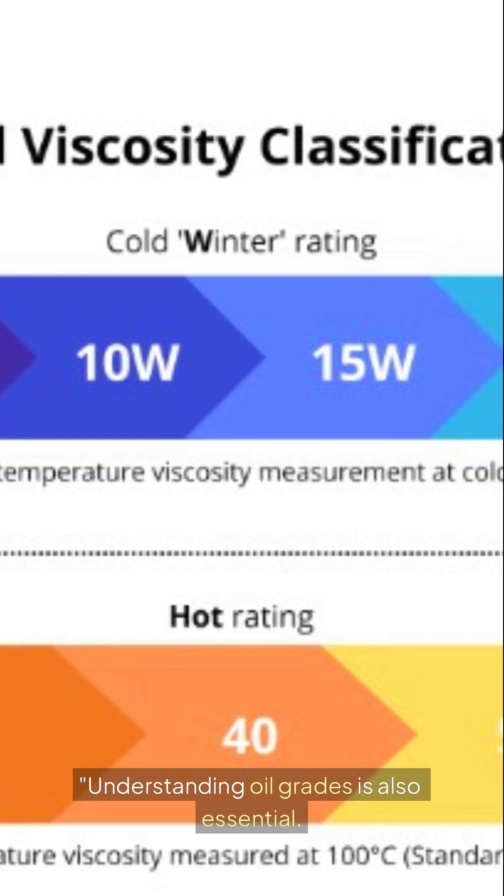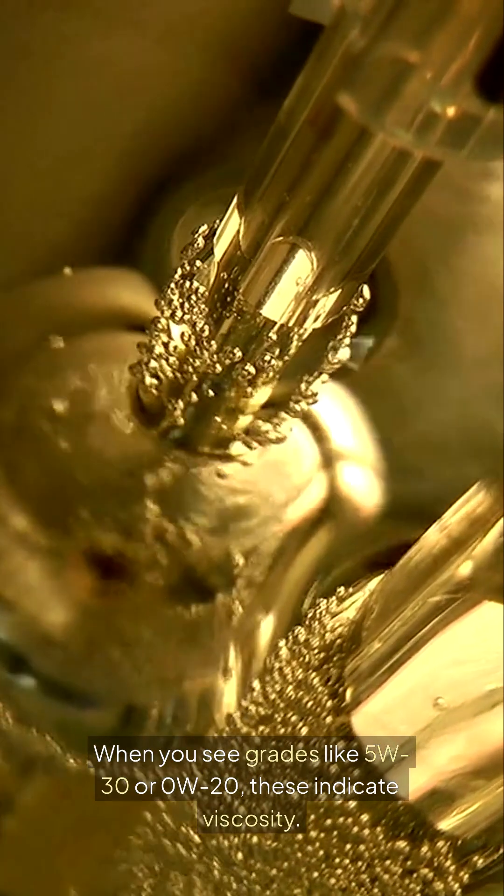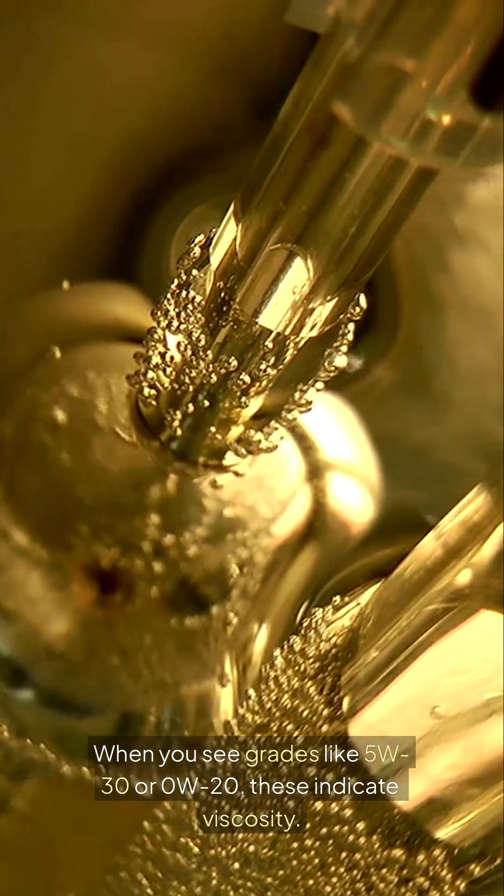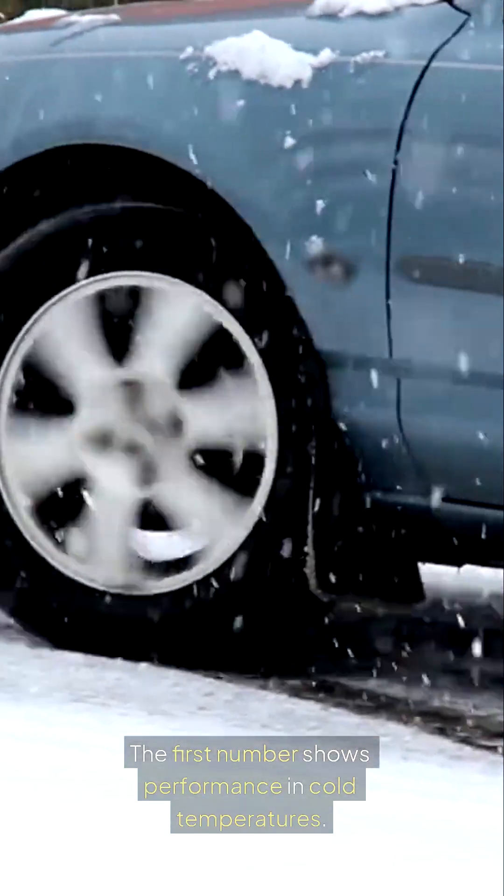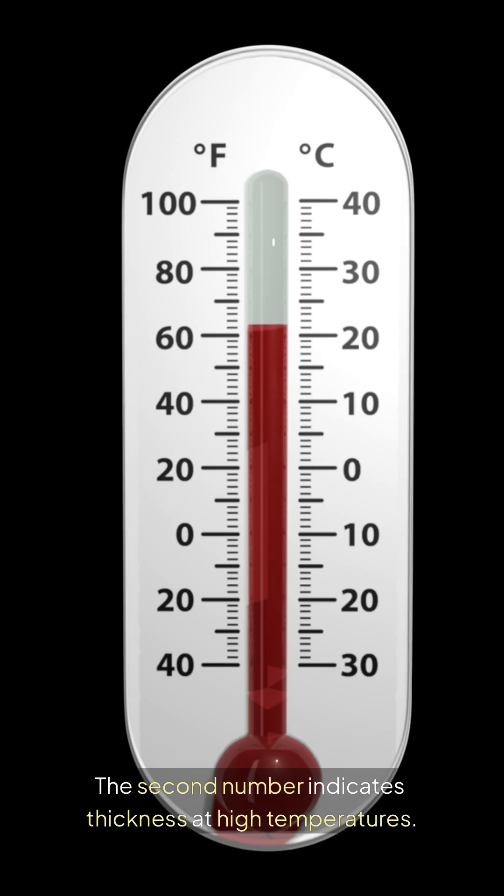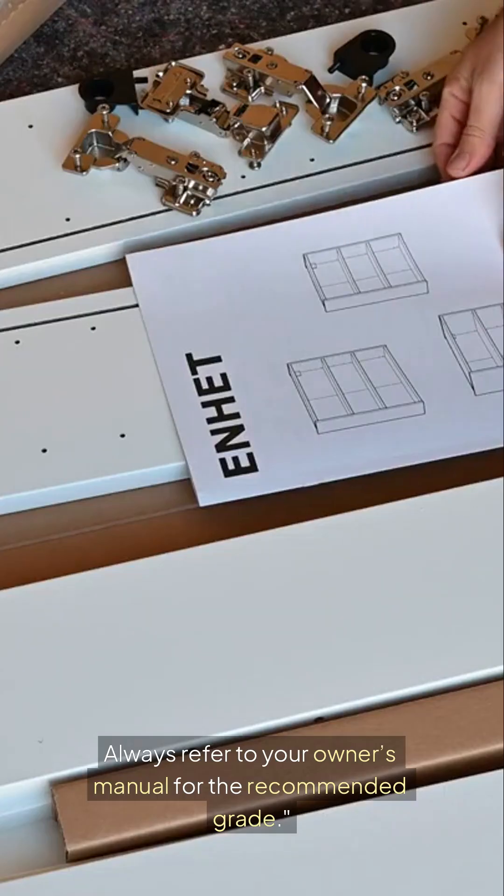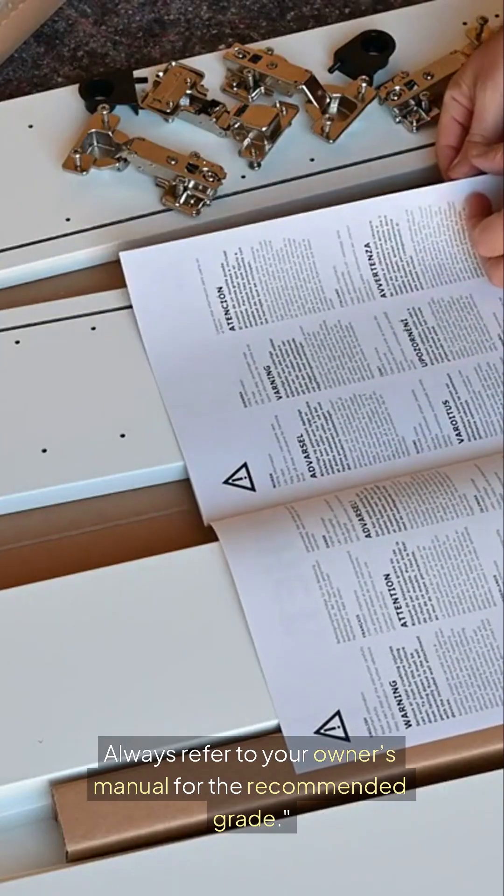Understanding oil grades is also essential. When you see grades like 5W30 or 0W20, these indicate viscosity. The first number shows performance in cold temperatures. The second number indicates thickness at high temperatures. Always refer to your owner's manual for the recommended grade.